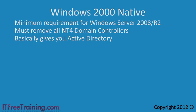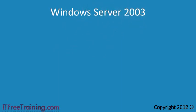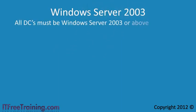The next domain functional level is Windows Server 2003. When your domain is at this level, all domain controllers must be Windows Server 2003 or above. If you attempt to add a lower-level domain controller such as Windows Server 2000 later on, the operation will fail. With the Windows Server 2003 domain functional level, you do get some new features.